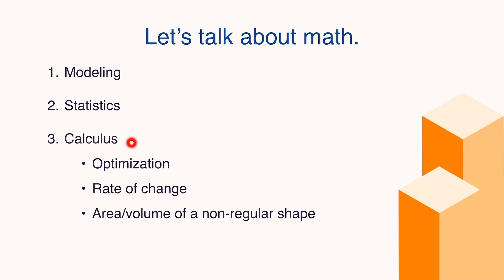Now let's talk about what kind of math you could do in your IA. There are typically three types of math IAs I see students do. The first is called modeling. Modeling is when you have a set of data and you're trying to create an equation that fits that data — for example, looking at sunrise times throughout the year and creating a sinusoidal or trigonometric function to model them.